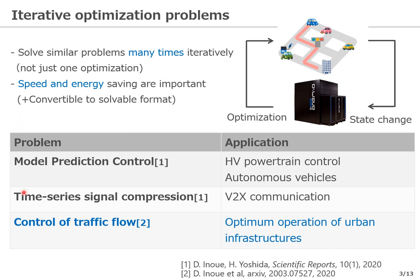So far, we have explored three practical applications. The first one was the model predictive control problem, which has applications for hybrid vehicle powertrain control and autonomous vehicle path tracking. We also considered a time series signal compression problem, which could appear in, for example, V2X communications. Today I am not going to talk about these two topics, but the results are reported in a recent paper.